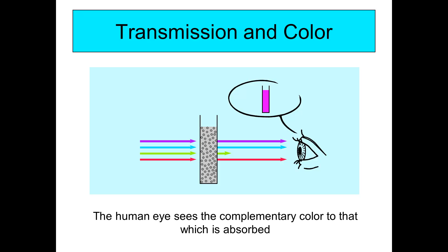To remind you how spectrophotometers work: the human eye can see the complementary color to the color that's absorbed. A beam of light comes through the cuvette, and the light that's been absorbed — in this case green light — means we perceive a purple-pink color. When measuring absorbance, you want to set the spectrophotometer to the wavelength of the light that's absorbed.